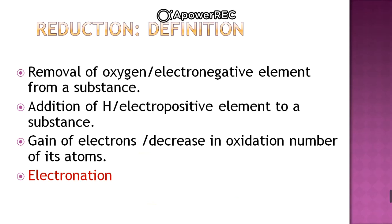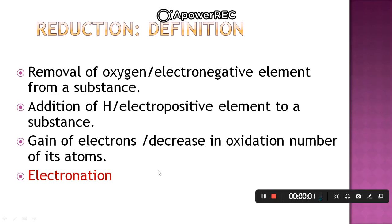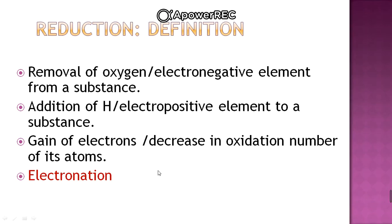Moving on to reduction. Under a similar definition as oxidation, we can say that removal of oxygen or any electronegative element from a substance results in reduction. Similarly, addition of hydrogen or any electropositive element to a substance results in reduction. If we want to define in terms of gain of electrons — as we define oxidation with loss of electrons — gain of electrons is reduction. Gain of electrons always results in a decrease in oxidation number. As this is the process where electrons are being added, we call it electronation.